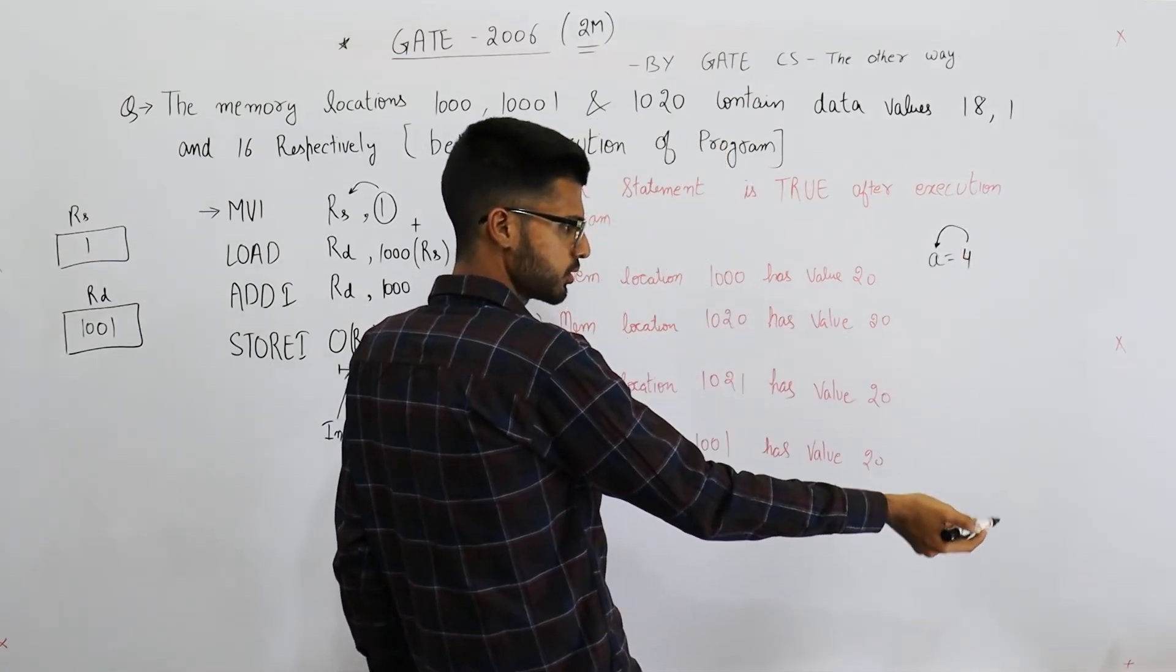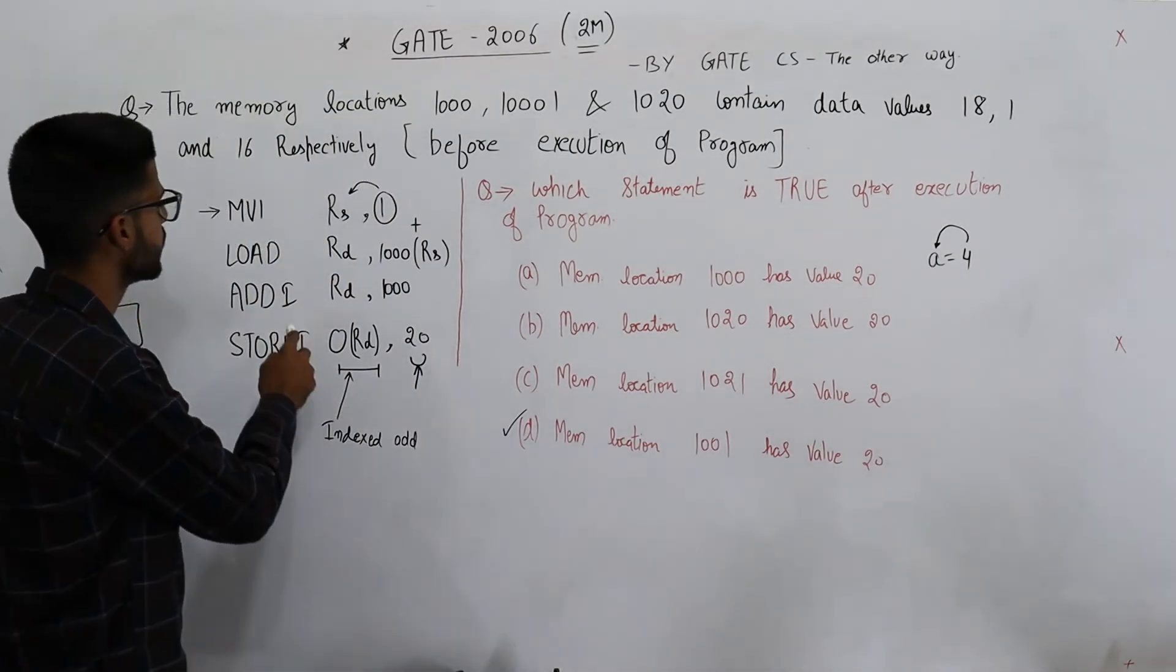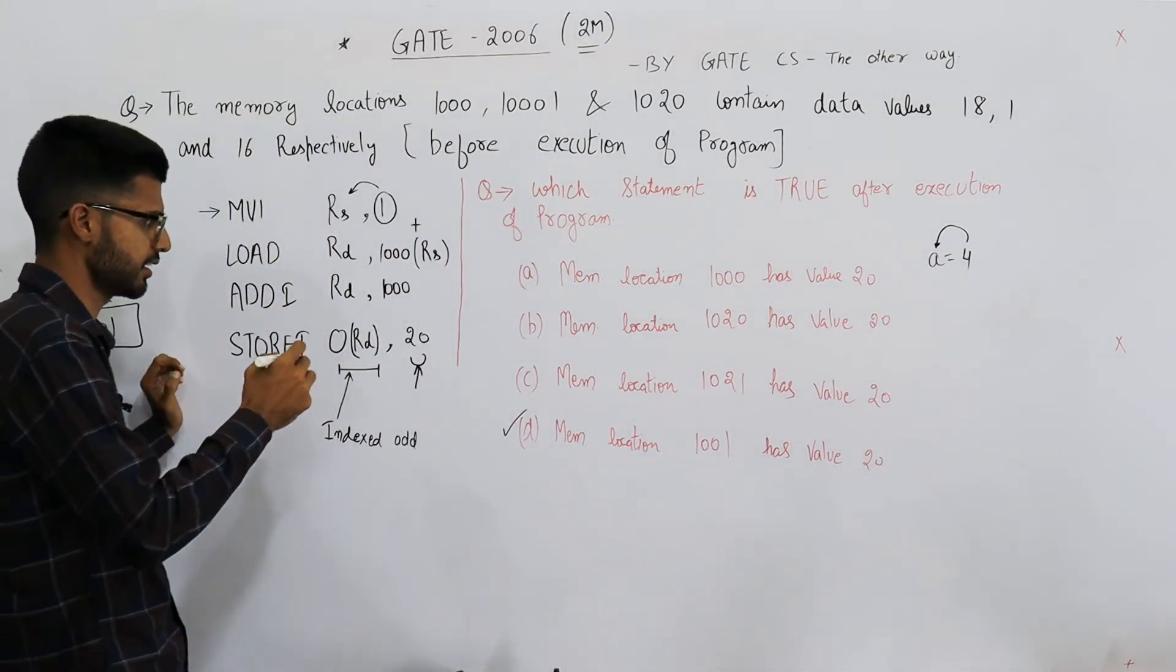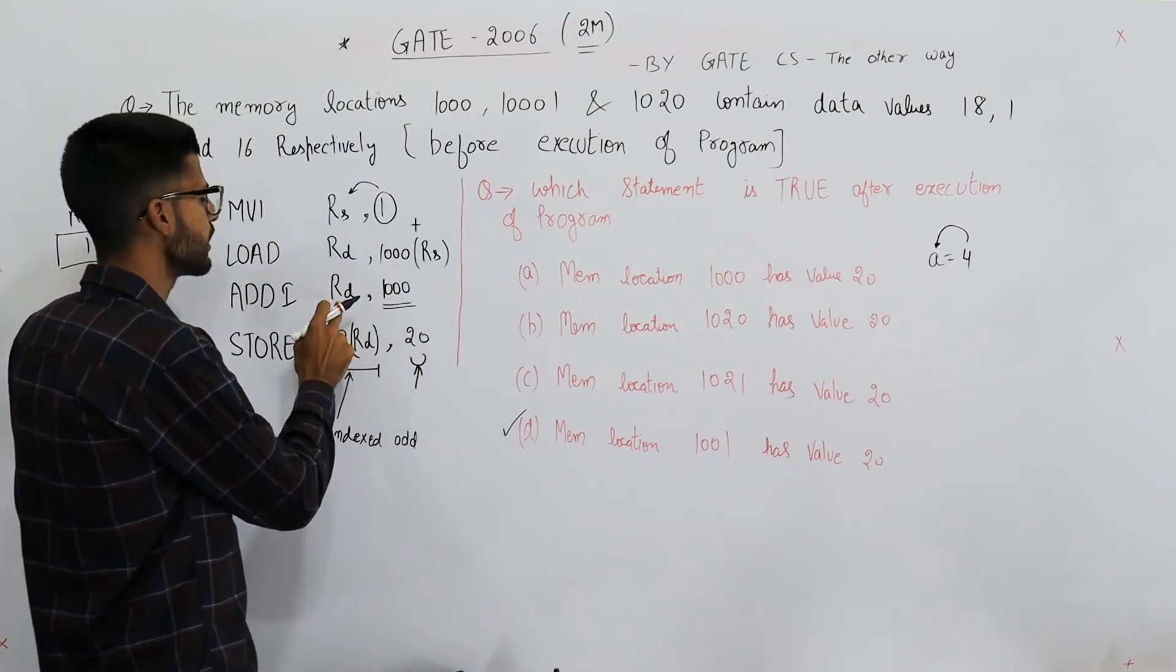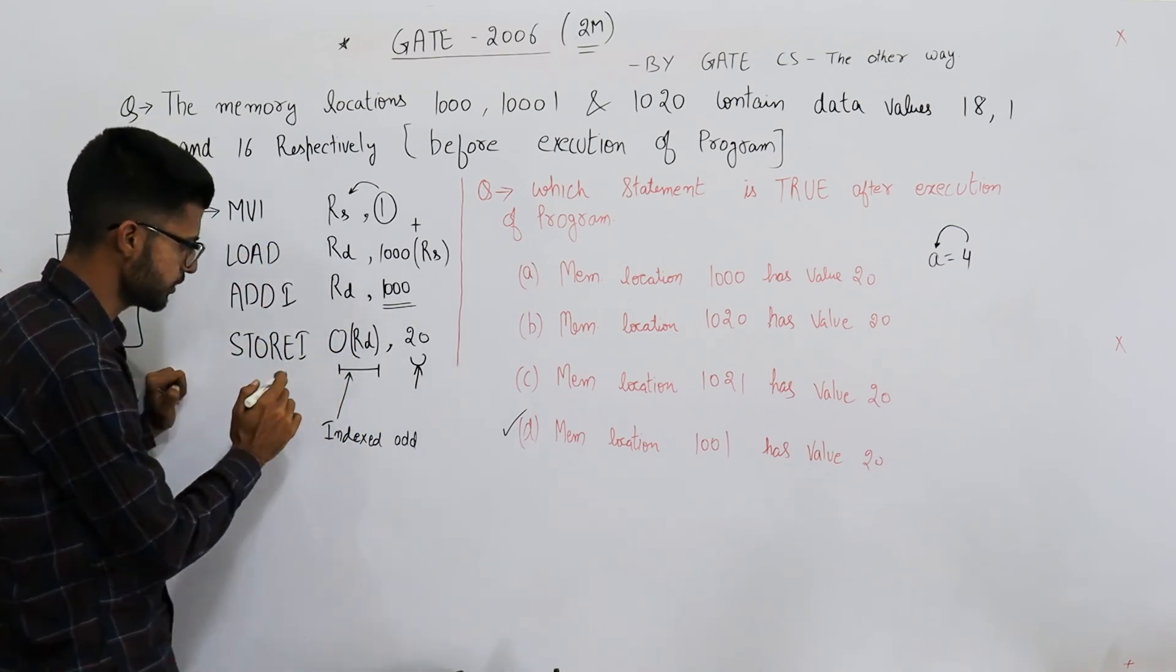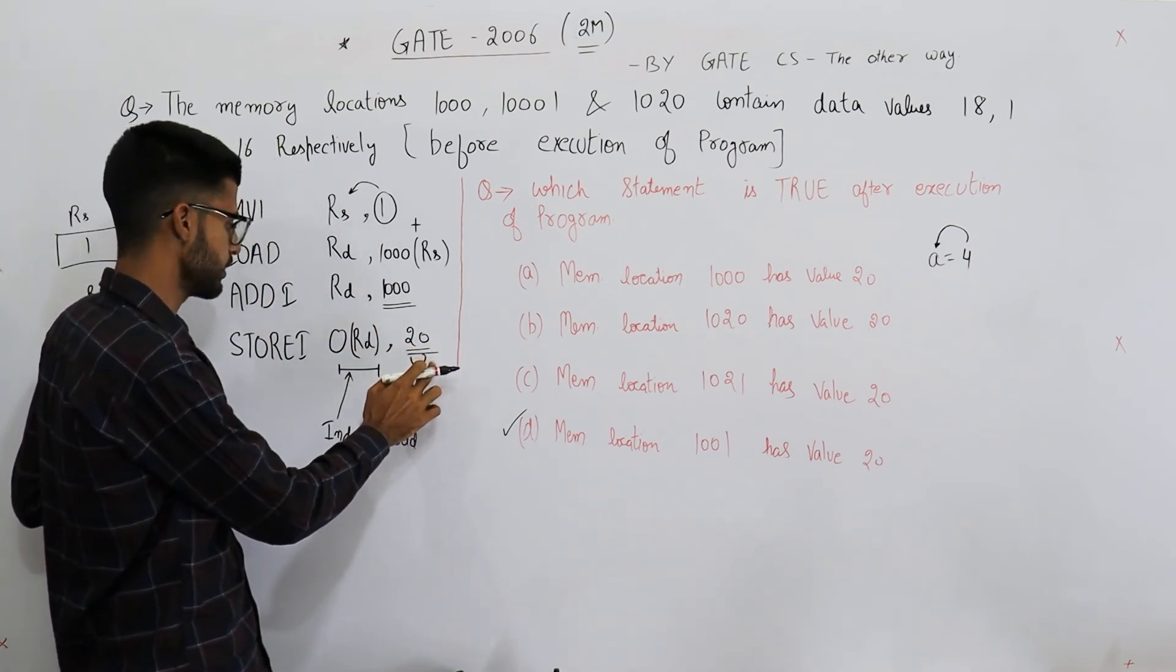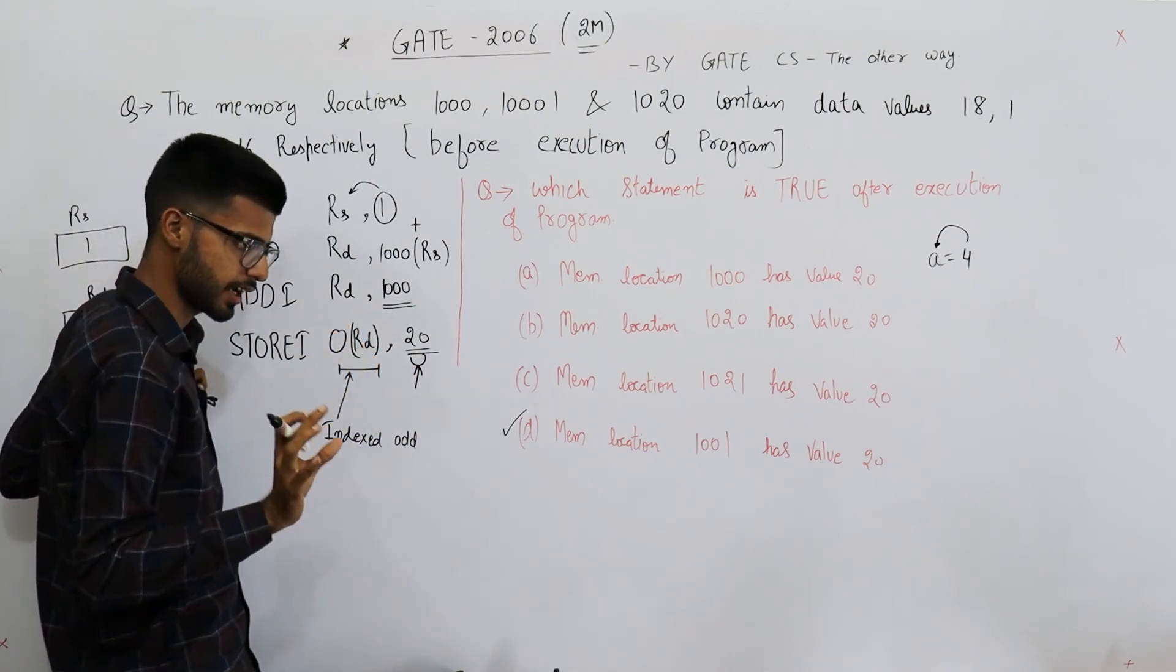Next thing is immediate. I've already explained it, but I'll repeat it once again. Immediate means whatever is in the instruction, that is our data. So here data is 1000 - that needs to be added to the contents of register Rd. Similarly, this I means immediate, so this 20 is our data. It's not any address; it's the data itself. So this 20 needs to be stored here, and what is this? This is a memory location - memory location's address.